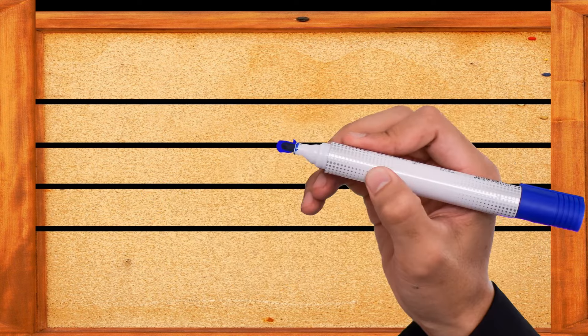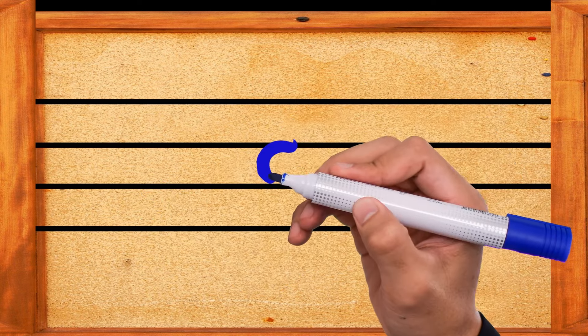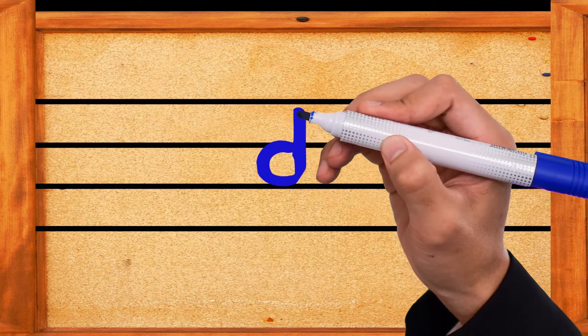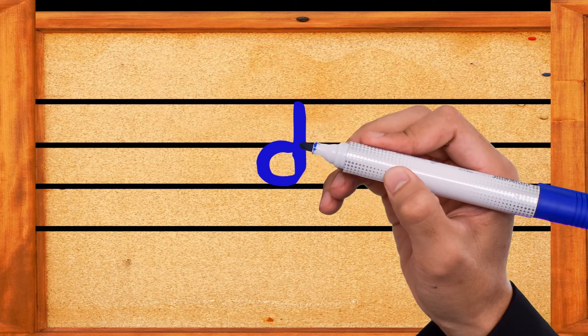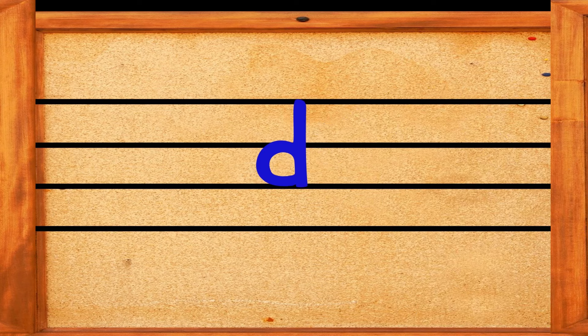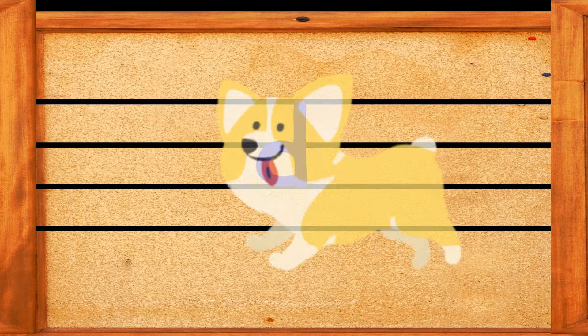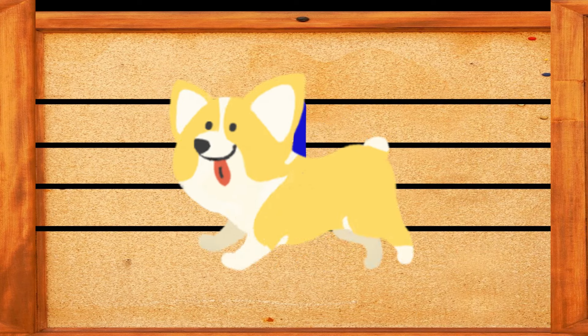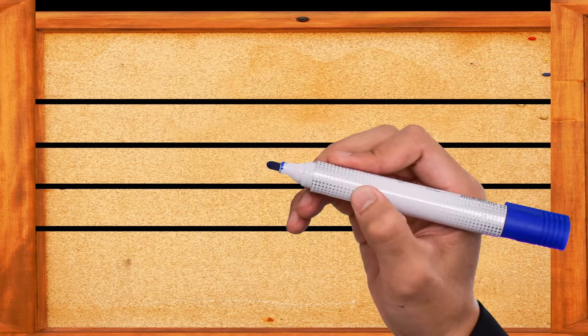Round and round, make a small curve, then go up and then come down and down. This is the letter D. D is for dog.